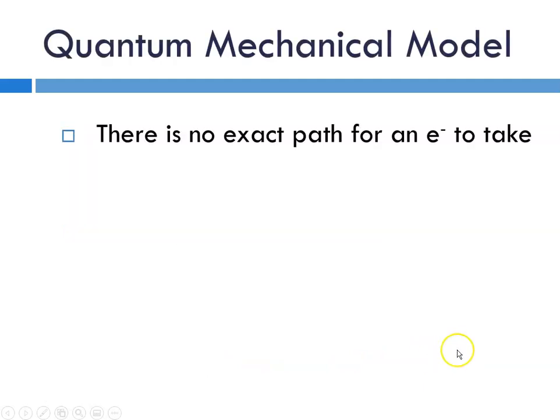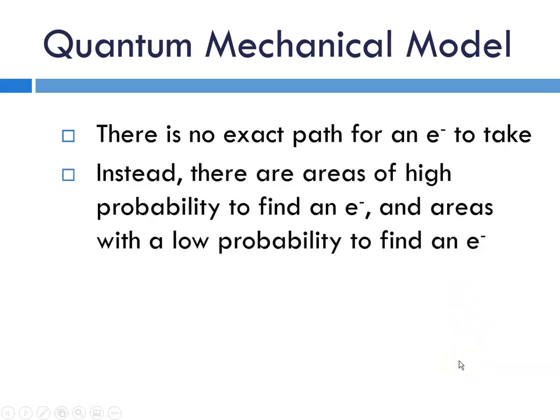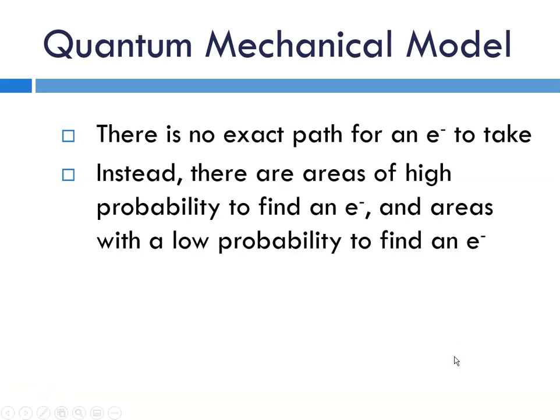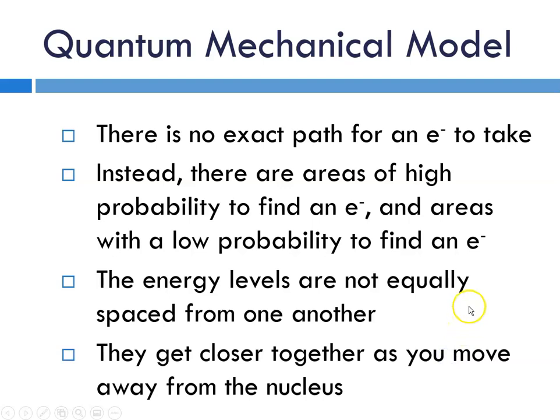So there's no exact path for an electron to take. What we talk about are areas of high probability to find an electron, and areas with a low probability to find an electron. And again, the energy levels are not equally spaced from one another.